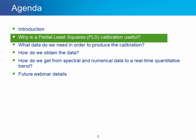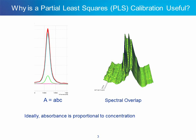Why is a partial least squares calibration useful? In many cases, a concentration of interest can be trended directly from a single peak, or perhaps a peak referenced to a baseline point. On the other hand, there are chemical and biological systems where absorbance information regarding component concentrations or physical properties of interest are overlapped and not accessible via direct absorbance trending. In cases where a univariate trend or even a ratio of trends cannot describe the concentration profile, multivariate algorithms such as PLS are very useful.